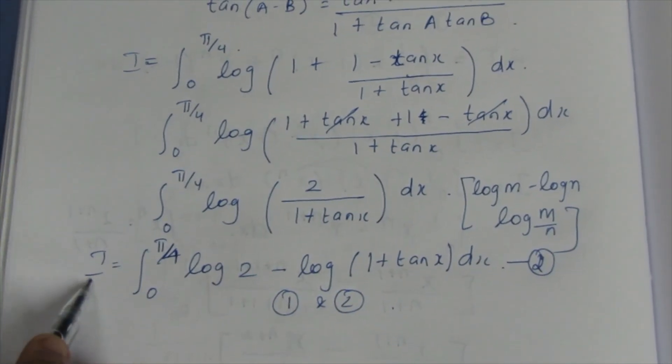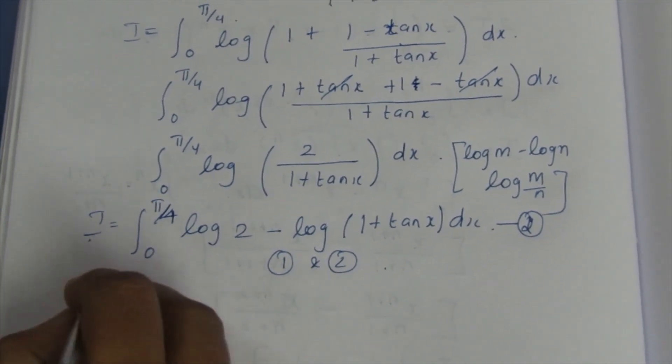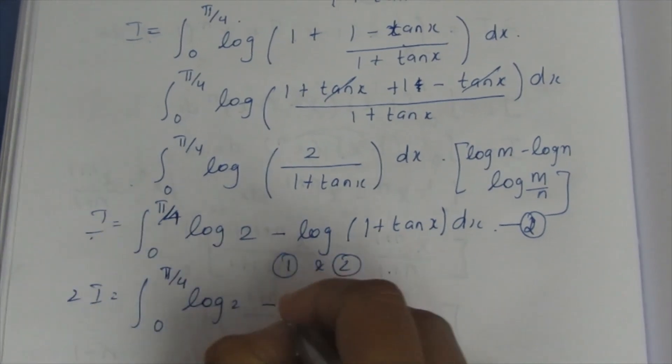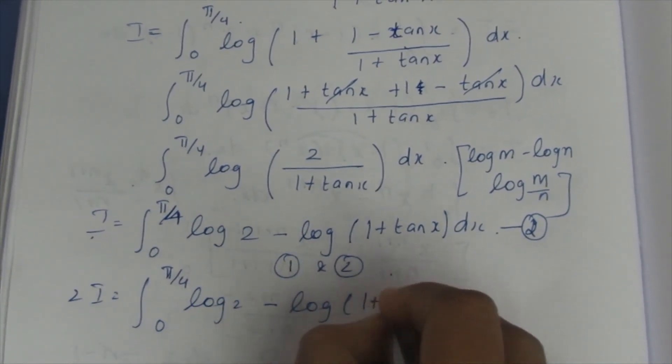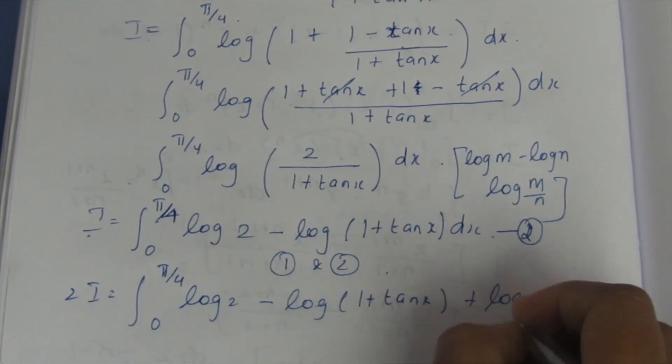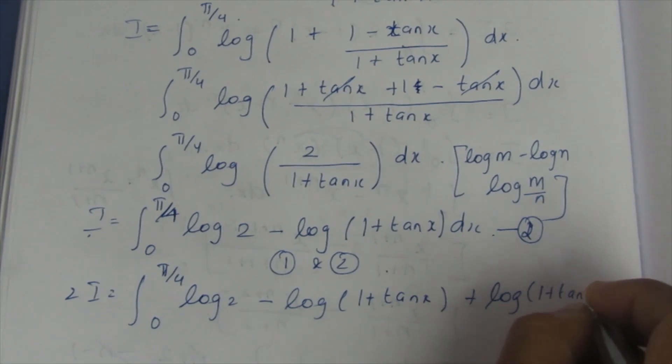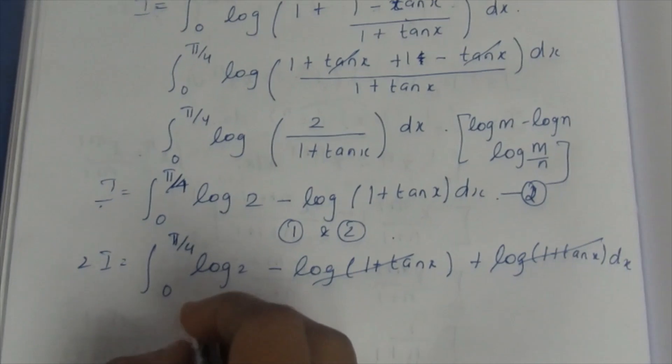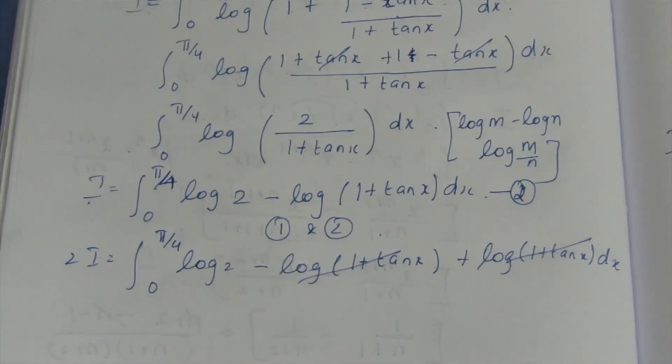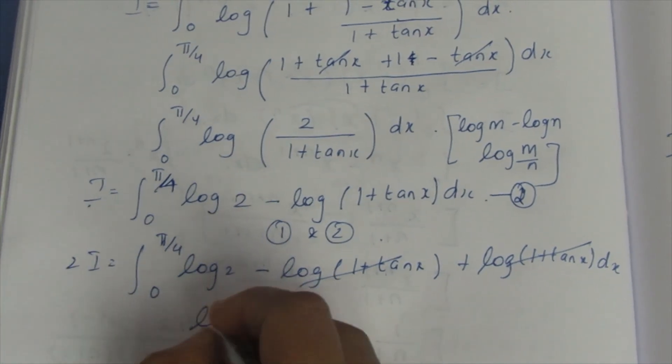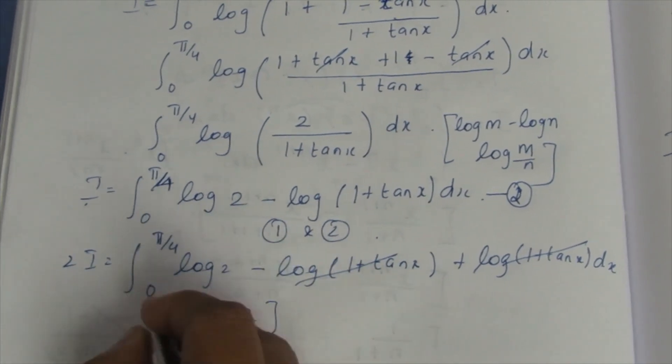LHS also we need to add, RHS also we need to add. This becomes 2I = ∫₀^(π/4) [log 2 - log(1 + tan x) + log(1 + tan x)] dx. The log(1 + tan x) terms will get cancelled. Now we have log 2 only. Log 2 is a constant value.